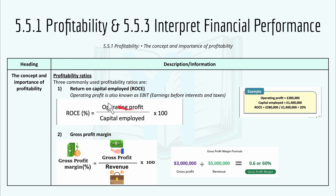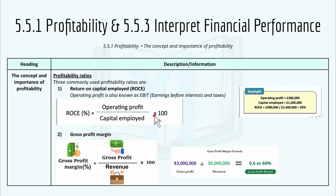Here are the three most commonly used profitability ratios. Number one is Return on Capital Employed. The operating profit, also known as EBIT or earnings before interest and taxes, is used in this formula. In percentage form: Return on Capital Employed = Operating Profit ÷ Capital Employed × 100. For example, if operating profit is £280,000 and capital employed is £1,400,000, then ROCE = £280,000 ÷ £1,400,000 × 100 = 20%.